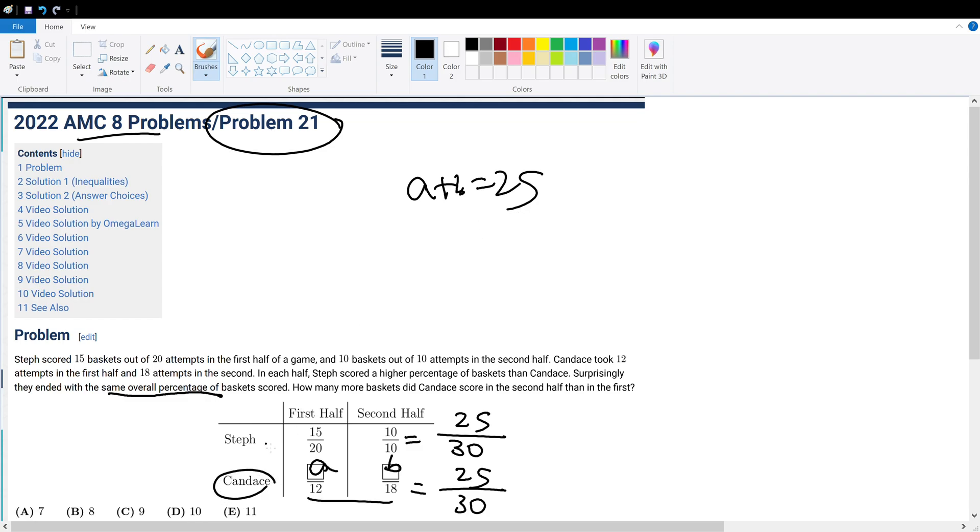Since Candice scored a lower percentage than Steph for each shot, this is actually simplified to 3/4. So A over 12 has to be less than 3/4. A has to be less than 9 because 9 over 12 is 3 over 4. So A has to be less than 9.